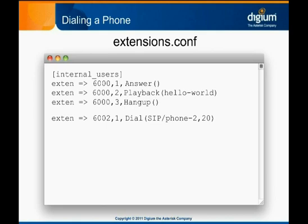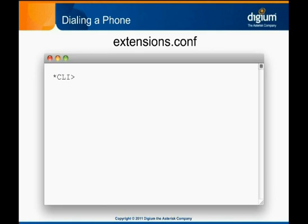Now to apply our addition to the dial plan, we must save our changes to extensions.conf and run dialplan reload at the Asterisk CLI. There we go. In one simple line of dial plan script, we've configured Asterisk to make a live call.